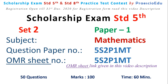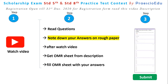What does the student have to do? Here are three steps. Step 1: Watch this video. Step 2: Read all the questions. Note down your answers on rough paper. After watching this video, get the OMR sheet from this video's description box. Fill the OMR sheet with your answers. In the OMR sheet, your registered email ID and role ID need to be filled, then fill your correct answers and submit it.